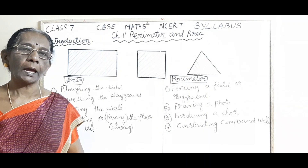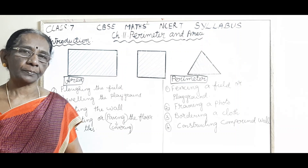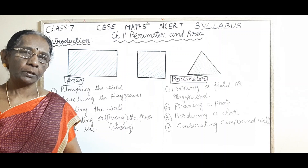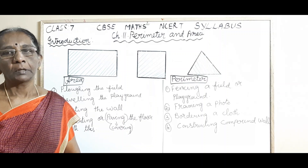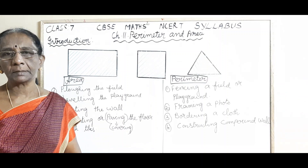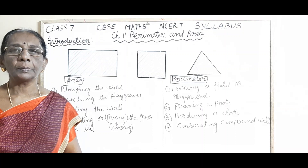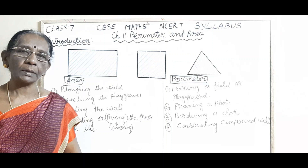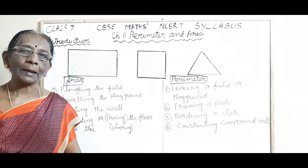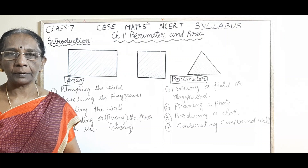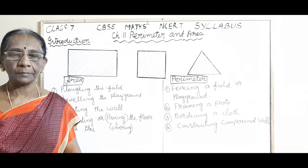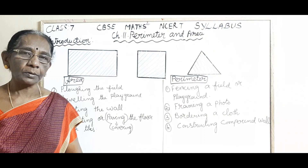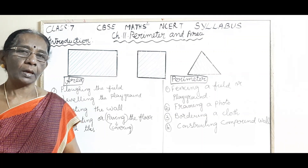Hi, hello my dear children. I hope all of you are staying safe. In the previous session, we were discussing about the perimeter of a closed figure. What is the perimeter? The perimeter is the total distance or the total length around the shape of a closed figure. And in this session, we are going to discuss about the other measure of the closed figures.